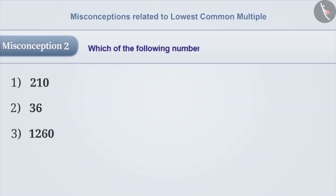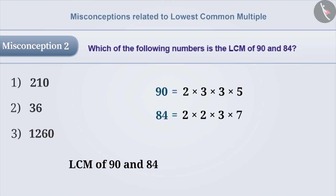Misconception 2. Which of the following numbers is the LCM of 90 and 84? In order to find the LCM of 90 and 84, many times their prime factors are written correctly. But by mistake, wrong factors are chosen.